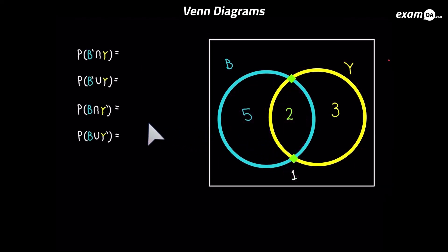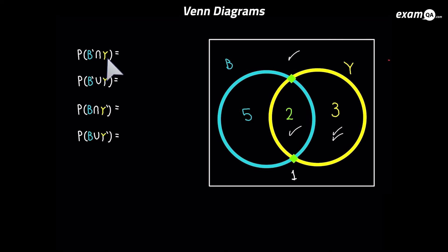Now we're going to try some numeric questions. It wants P(not B ∩ Y). Tick every place where it's not B, and tick every place which is Y. The question says AND — intersection — so we're looking for the region which was in both cases, basically with a double tick. And of course it's just the 3. Since it's got P for probability, it's going to be 3 over the total — 3 over 11.